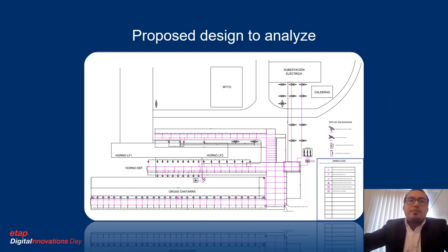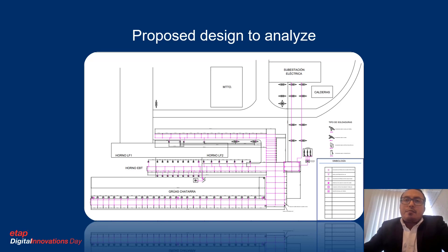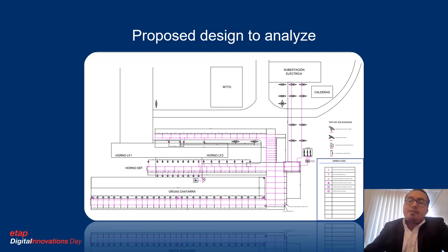This was the first design, given the physical conditions of the plant. The design contains a certain number of rods and cables which needed to be modeled in ETAP — the software we used to prove that the characteristics of the system are going to be accurate for the requirements of the actual plant.